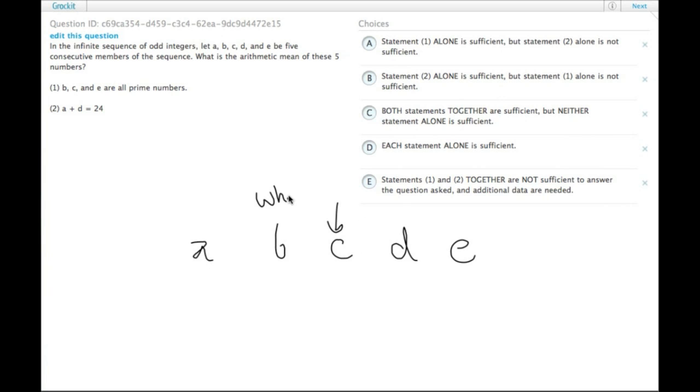So the question is, what is C? So statement one tells us that B, C, and E are all prime numbers. So we have to have two prime numbers in a row, skipping an odd number, and then another prime number.